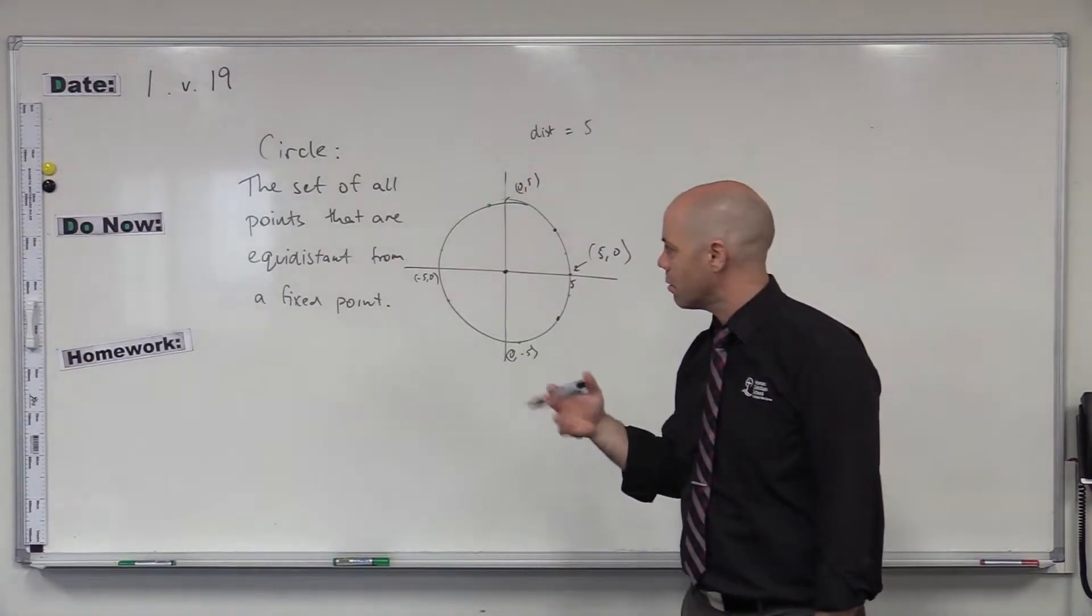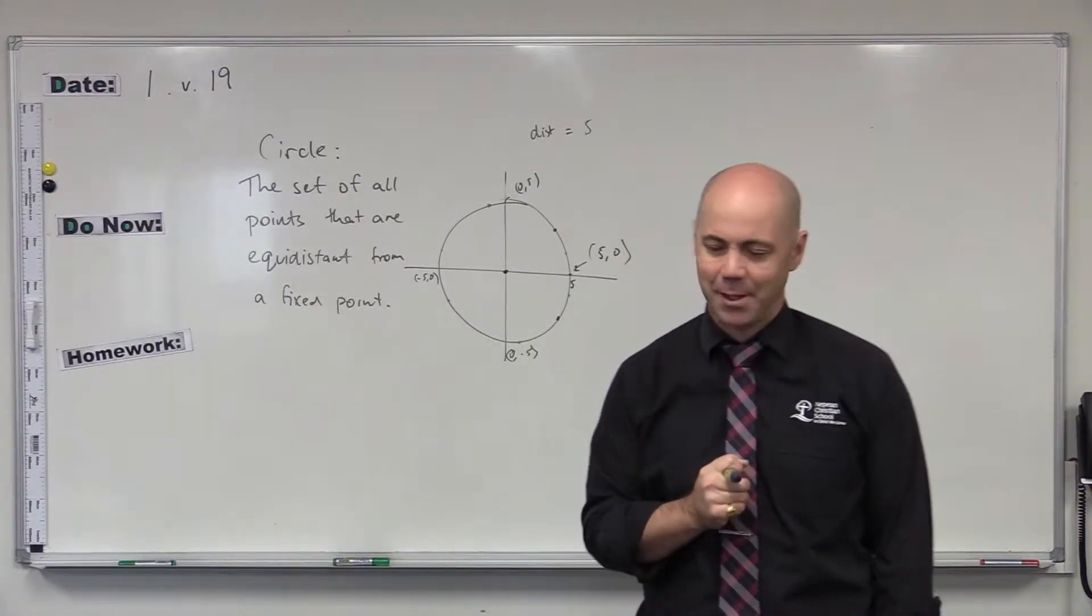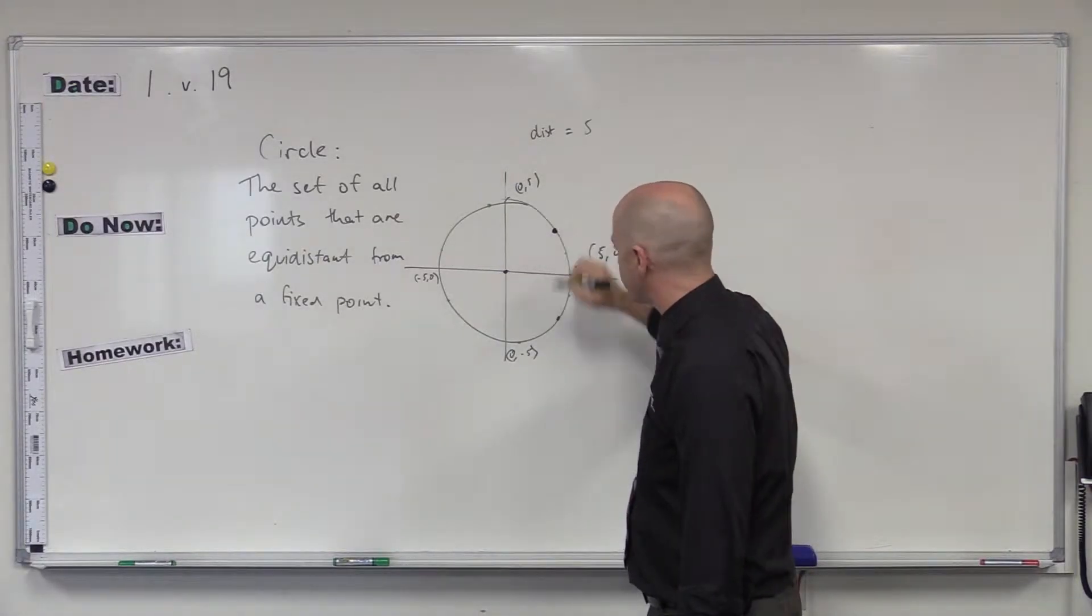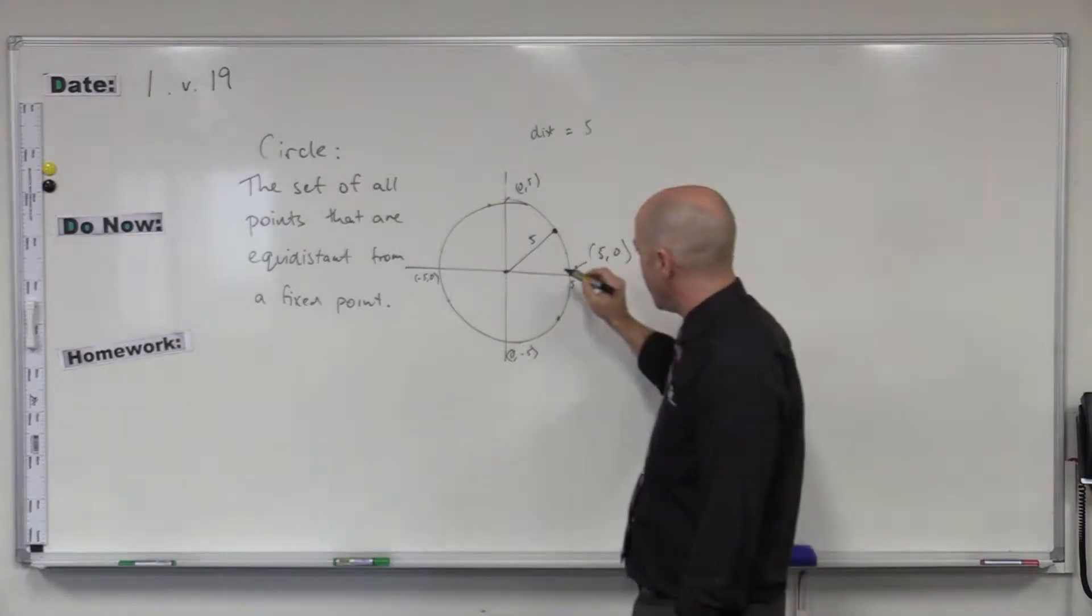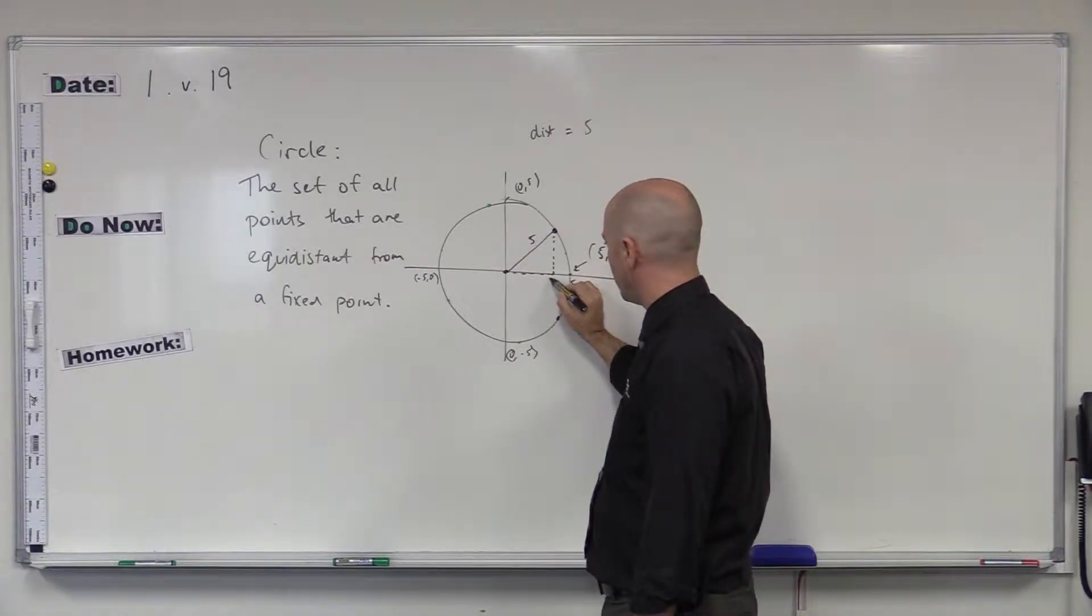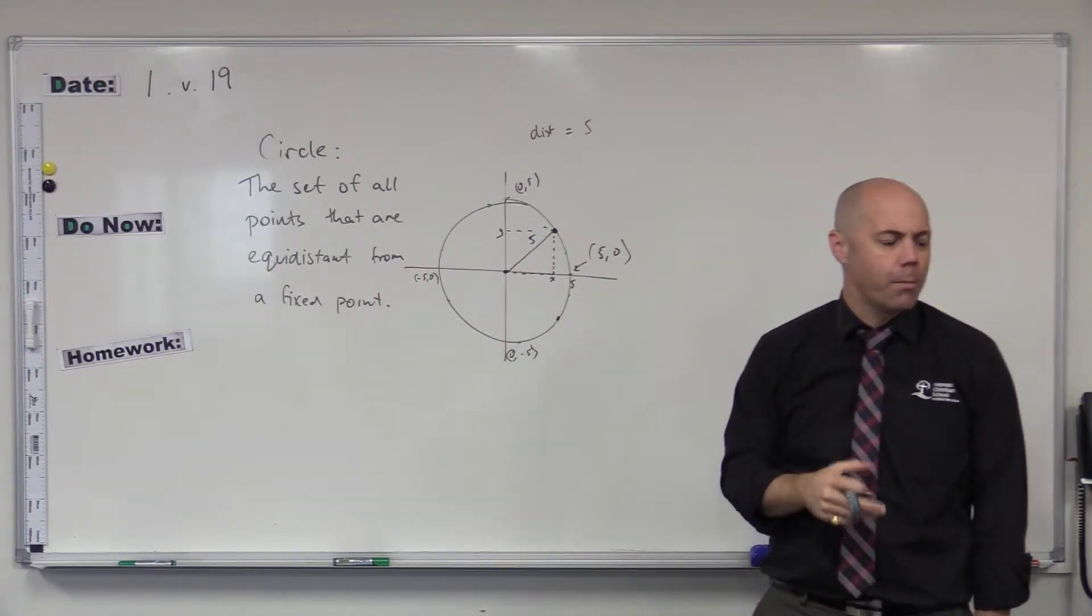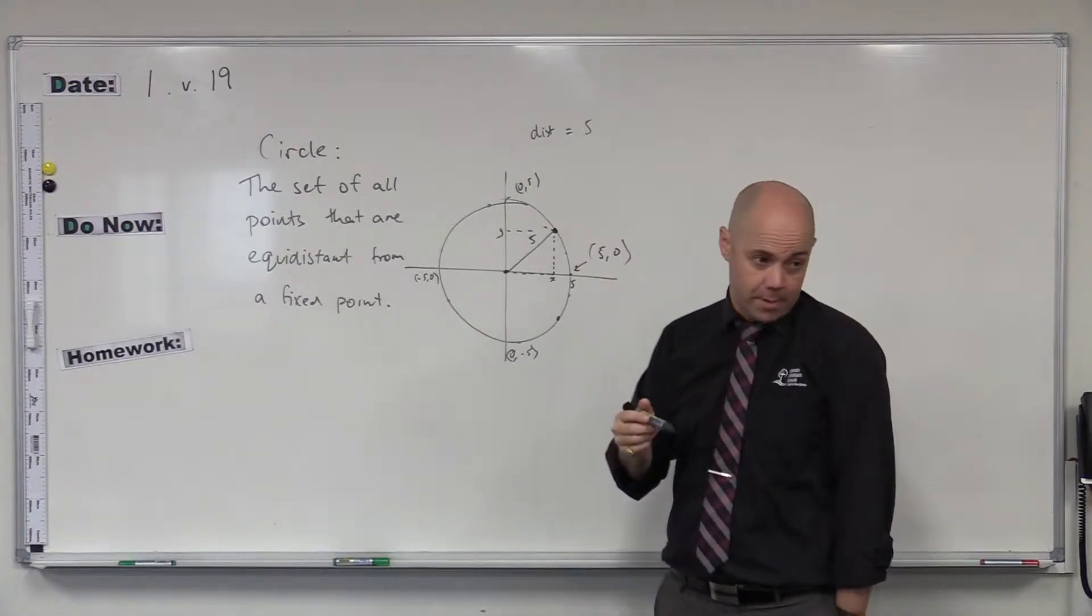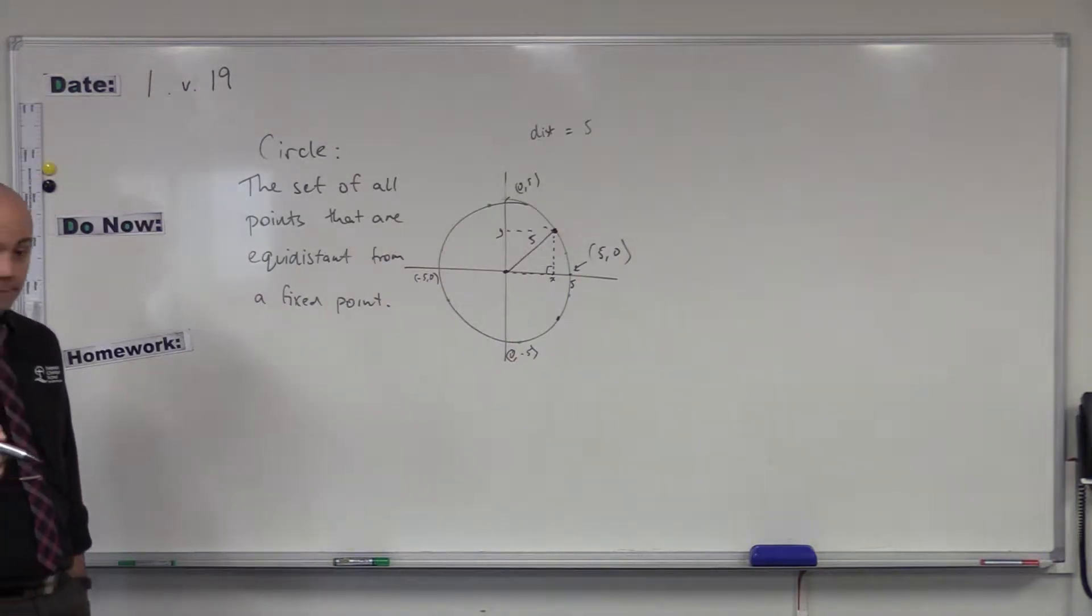How can we come up with an equation that describes how we can calculate those points? So what do we know? Let's isolate one of these points here. Let's say this point here. We know that that distance is 5. If I were to say, well, let's consider, at this point here, let's call that just x. We'll just call it an x for the moment. At this point here, we're going to call that y. What do we know about the x and the y if that distance is going to be 5? They are less than 5. They are less than 5? Sure, that's great.